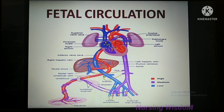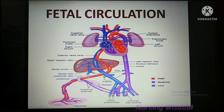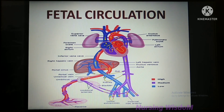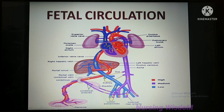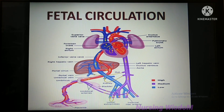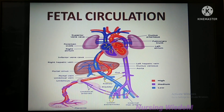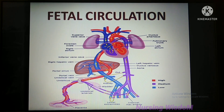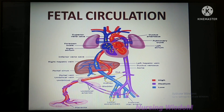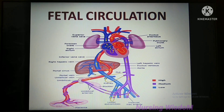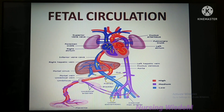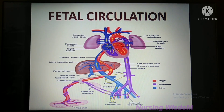Oxygenated blood from the placenta travels to the fetus through the umbilical vein. The oxygen saturation level of this blood is 80%. The umbilical vein reaches the level of the liver and divides into two branches: right and left umbilical branches. The right umbilical branch supplies blood to the liver. Deoxygenated blood from the liver drains via the portal vein, so here for the first time, less oxygenated blood gets mixed with highly oxygenated blood present in the umbilical vein. In total, in fetal circulation, the oxygenated blood will get mixed with less oxygenated blood five times.